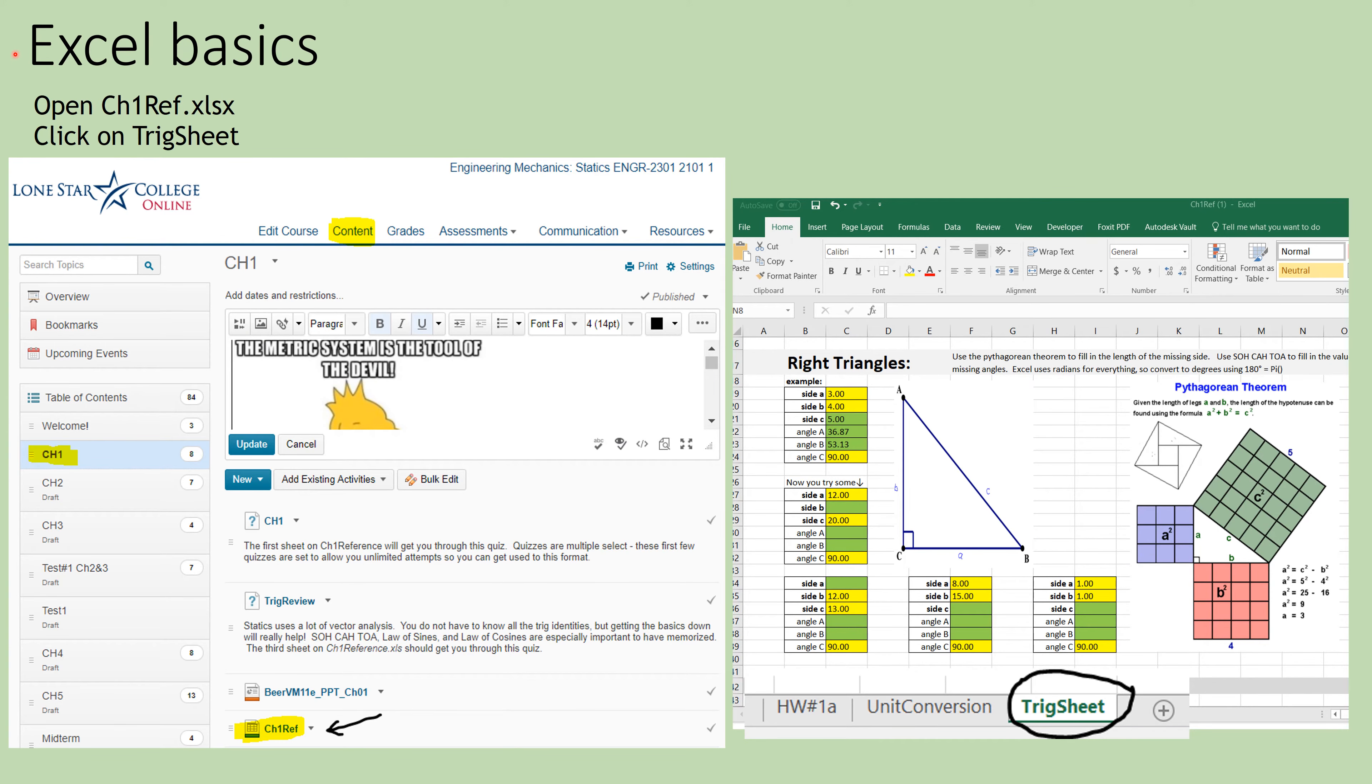So the first assignment that you're going to turn into the Dropbox out of Chapter 1 is right down here, Chapter 1 Reference. So you're just going to go into Content, Chapter 1, and then download this Excel file, Chapter 1 Reference. When you download the file, look along the lower border and click on Trig Sheet. And this will pull up some tables that are already set up for you, and all you have to do is click on the green cells and you're going to be filling in equations in the green cells.